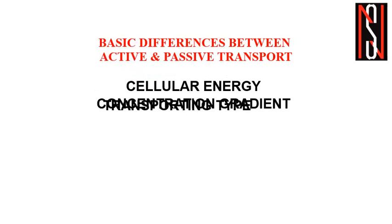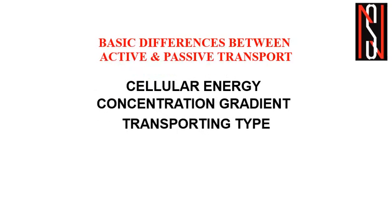Active transport is involved in transporting all kinds of molecules, including complex sugars, proteins, large cells, ions, etc. Whereas passive transport is usually involved in transporting soluble molecules, which includes water, oxygen, carbon dioxide, monosaccharides, lipids, etc.